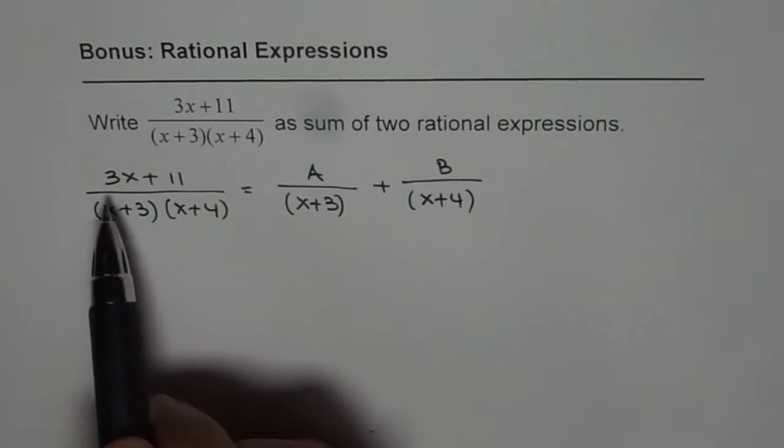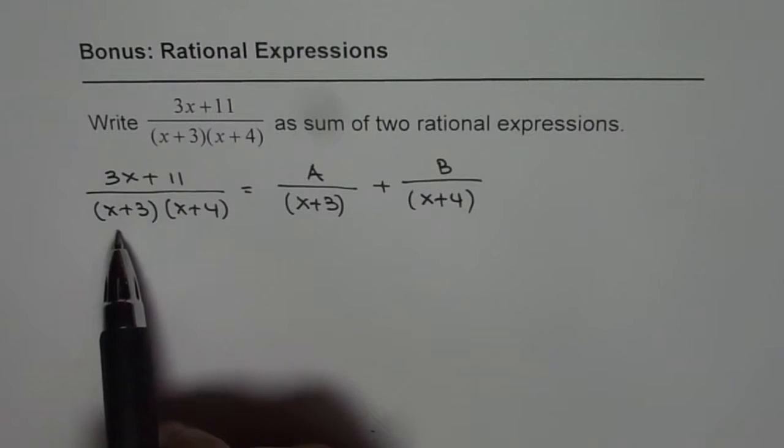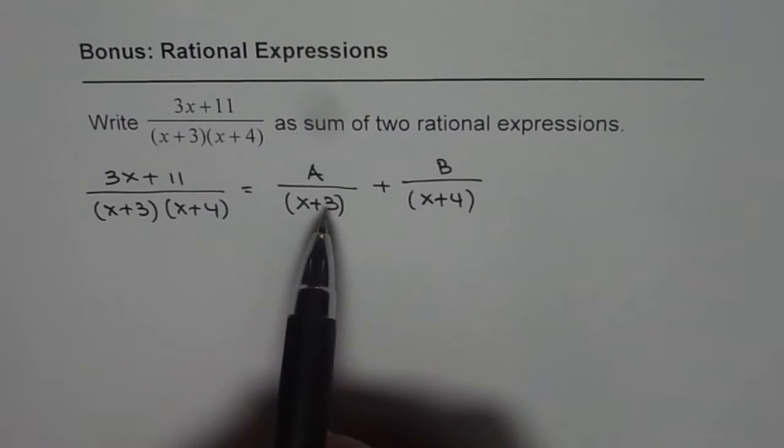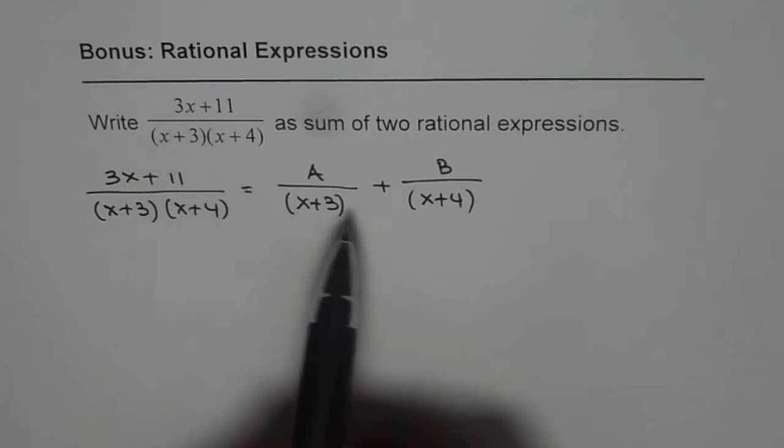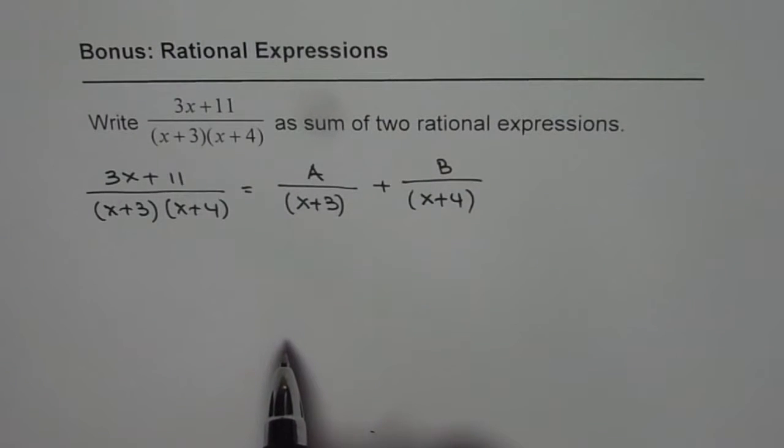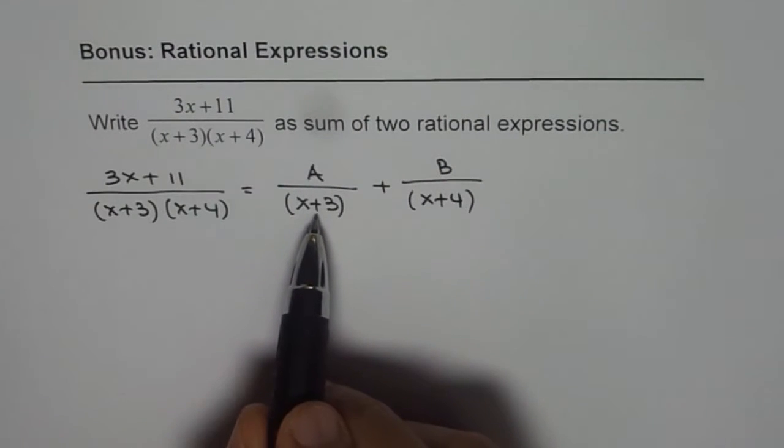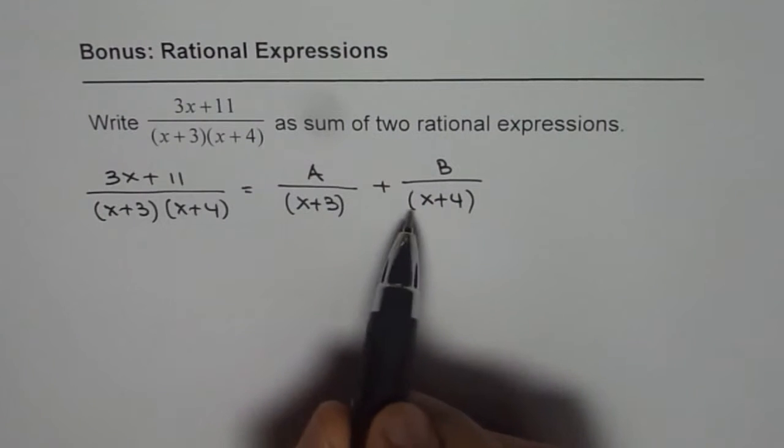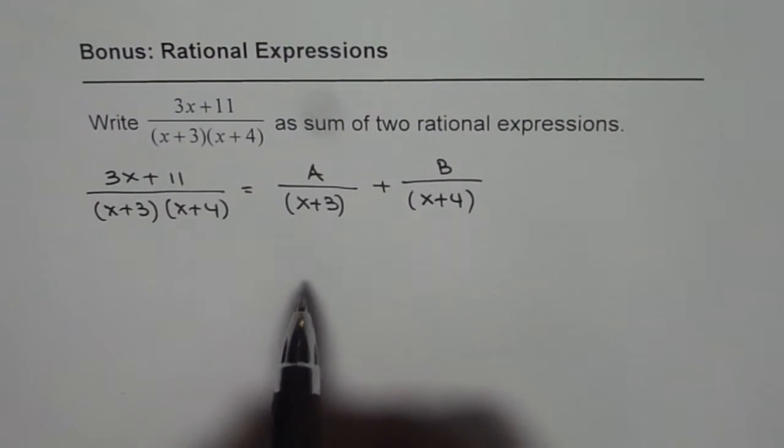Now if I have to write 3x plus 11 over (x plus 3)(x plus 4) as sum of 2 rational expressions as I have given, then to find A and B, what should we do? Well, we can begin with taking this common denominator and solving the right side.